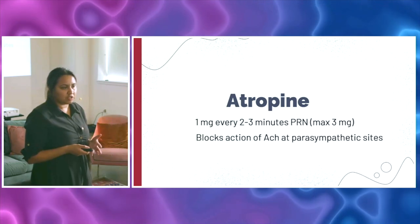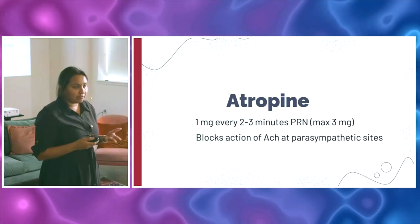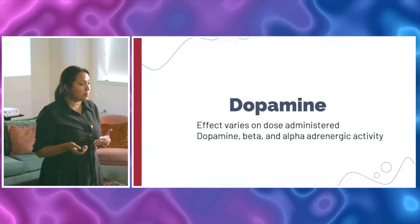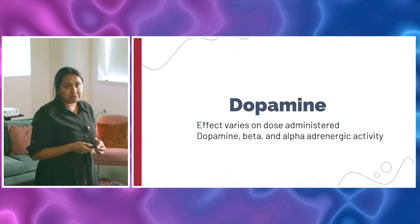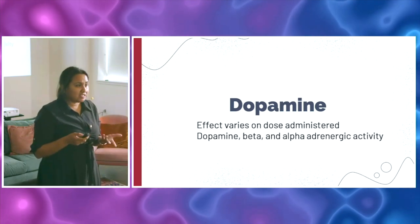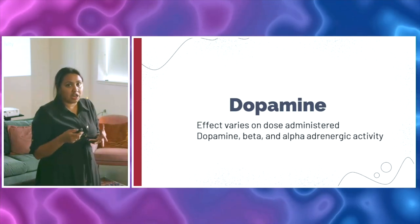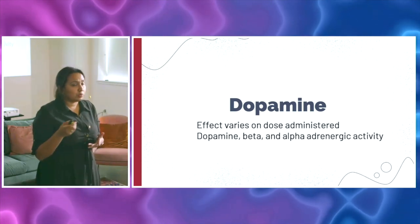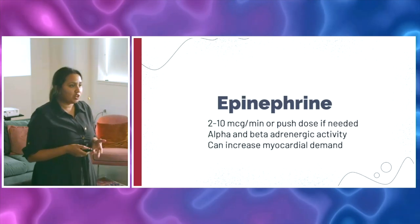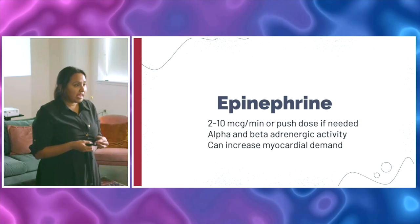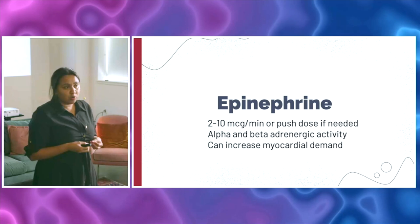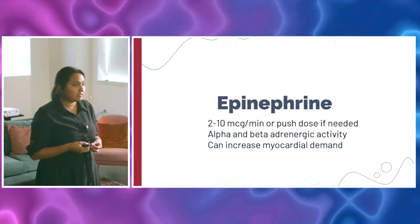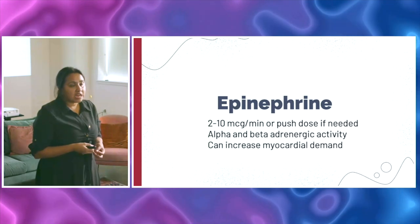The next drug is dopamine — it's still in the algorithm, usually comes pre-mixed, and the effect varies by dose, typically five to twenty micrograms per kilogram per minute with multiple receptor activities. The big one is epinephrine, which has strong beta-adrenergic receptor activity on the heart to get the heart rate up. You can start with two to ten micrograms per minute infusion, or use push-dose at twenty to thirty micrograms as needed to stabilize the patient acutely. Be careful though — it can increase myocardial demand, so in cardiogenic shock you might quickly move on to pacing.